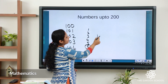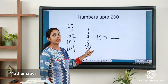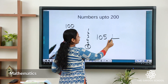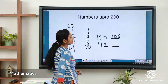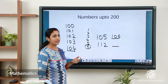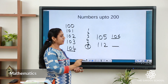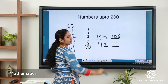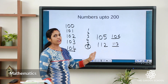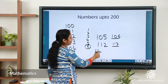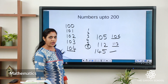Let's practice: the number after 105 is 106. The number after 112 — count 110, 111, 112, 113 — so it is 113. The number after 145 is 146. The number after 182 — count 180, 181, 182, 183 — so the answer is 183. By counting like this, we can find the number that comes after any given number.